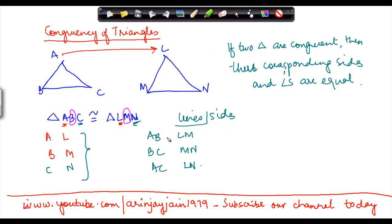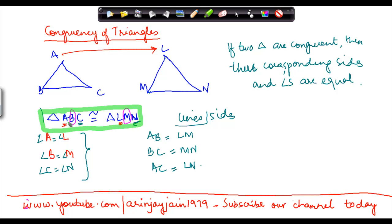This means that side AB equals LM, BC equals MN, and AC equals LN. Similarly, angle A equals angle L, angle B equals angle M, and angle C equals angle N. If triangle ABC is congruent to triangle LMN, then these corresponding angles and corresponding sides must all be equal.